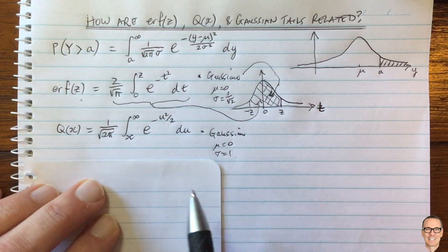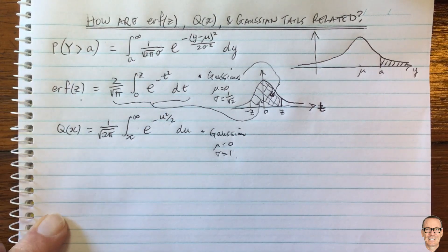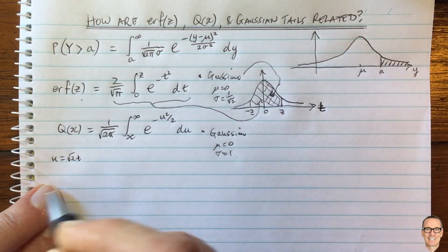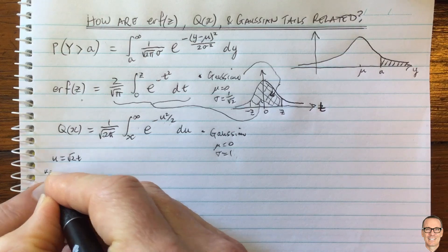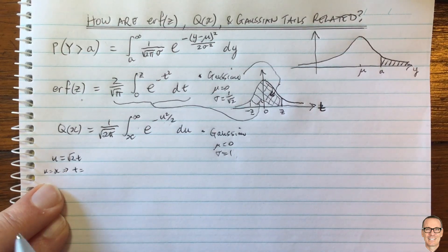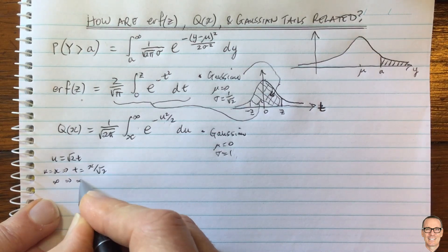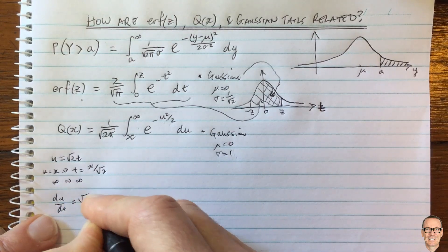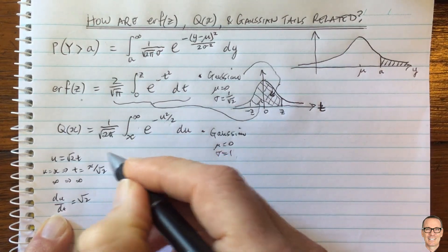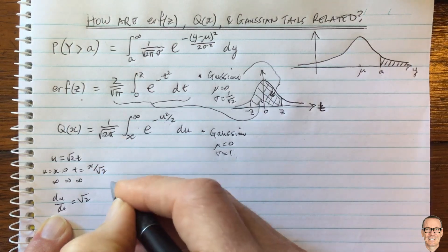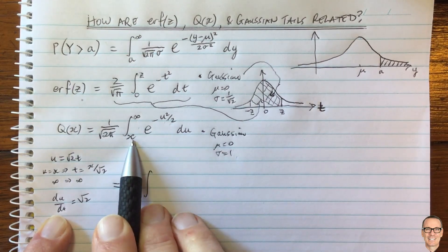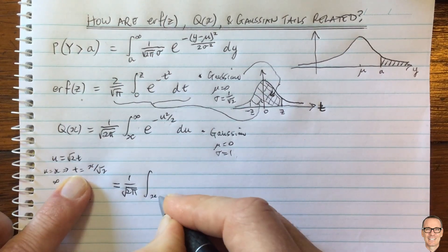So Q is going to be very closely related to the general Gaussian tail we're interested in. Let's see how they all relate. To relate the Q function to the error function, we do a simple change of variables: let u equal the square root of 2 times t. When u equals x, that implies t equals x divided by the square root of 2. When u goes to infinity, the upper limit stays infinity. We have du/dt equals the square root of 2. So the Q function equals 1 divided by the square root of 2 pi, with the integral lower limit now t equals x divided by the square root of 2.